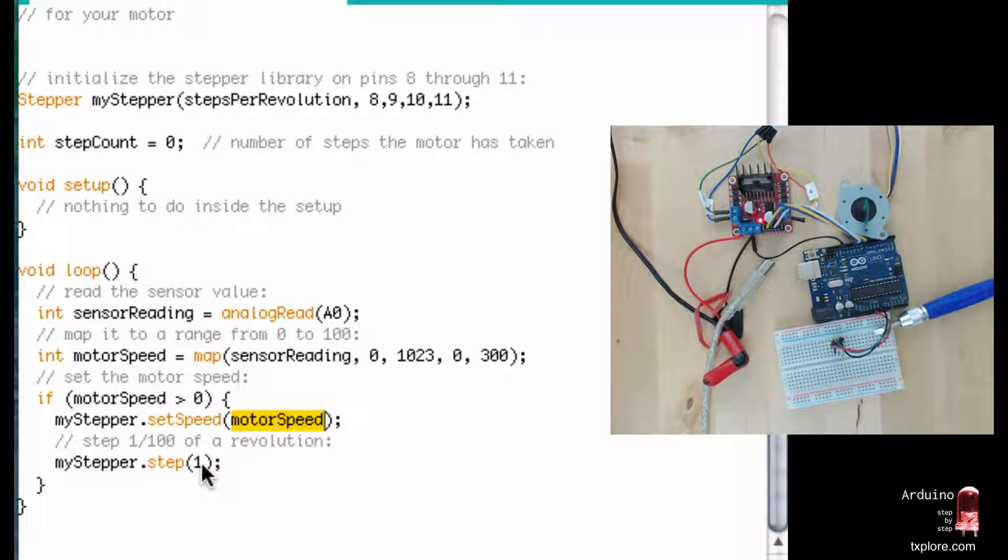And every time I do that, I just instruct the motor to go ahead by a single step. Now you are able to, of course, play around with the values here. So you might choose to go two or three steps ahead every time that you want to move the motor. I'll show you what happens when you do that.